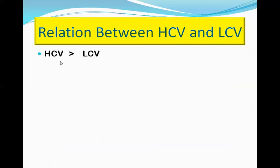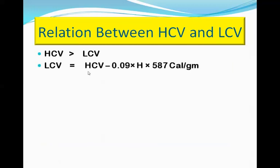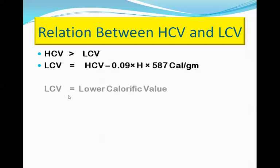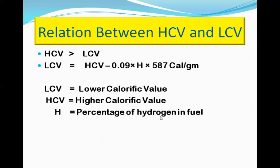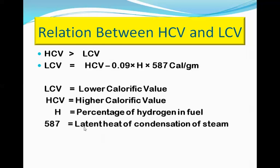There exists a relationship between HCV and LCV. HCV is greater than LCV, and LCV can be calculated as: LCV = HCV − 0.09 × H × 587 calories per gram, where H is the percentage of hydrogen present in the fuel, and 587 is the latent heat of condensation of steam.